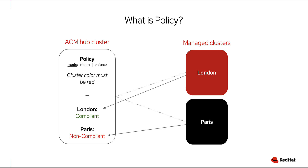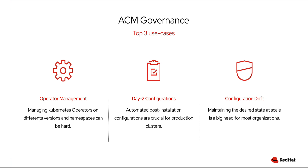Non-compliance results in a violation. So in this case, the London cluster is compliant and the Paris cluster has a violation. This sounds great — from this example we can start to imagine some other helpful use cases.